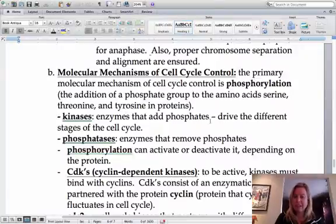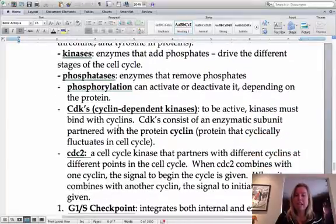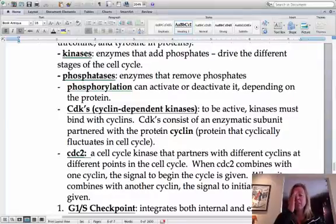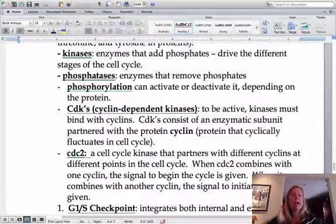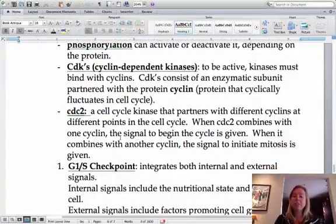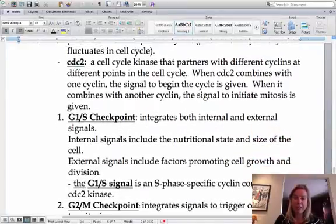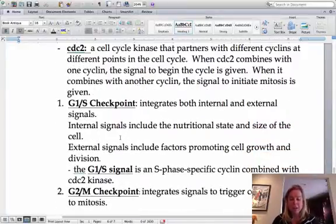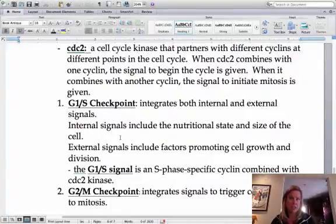So we've got our kinases, which are the enzymes, and phosphatases are going to be enzymes that take away phosphates. CDK is going to be the ones that have to bind with cyclin, and that's that protein. And what's going to happen is cyclin is going to fluctuate throughout the cell cycle, depending on if everything is okay for it to pass that cell checkpoint. So CDC2 is going to be a specific one that we have as mammals, and we'll talk about that a little bit later. So in the next part, we're going to talk about each checkpoint and the specific molecular mechanism that's going to allow it to pass to the next checkpoint.